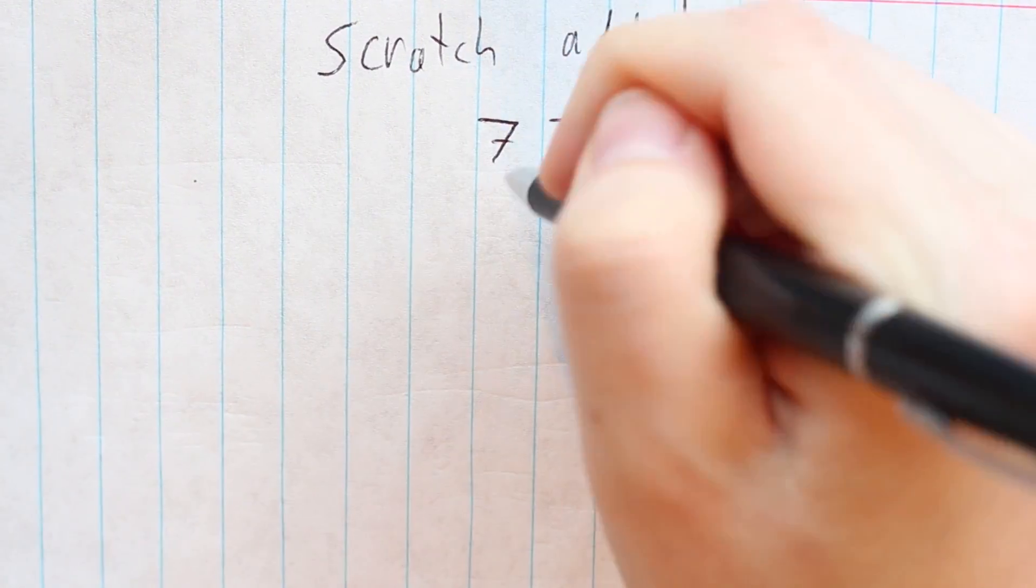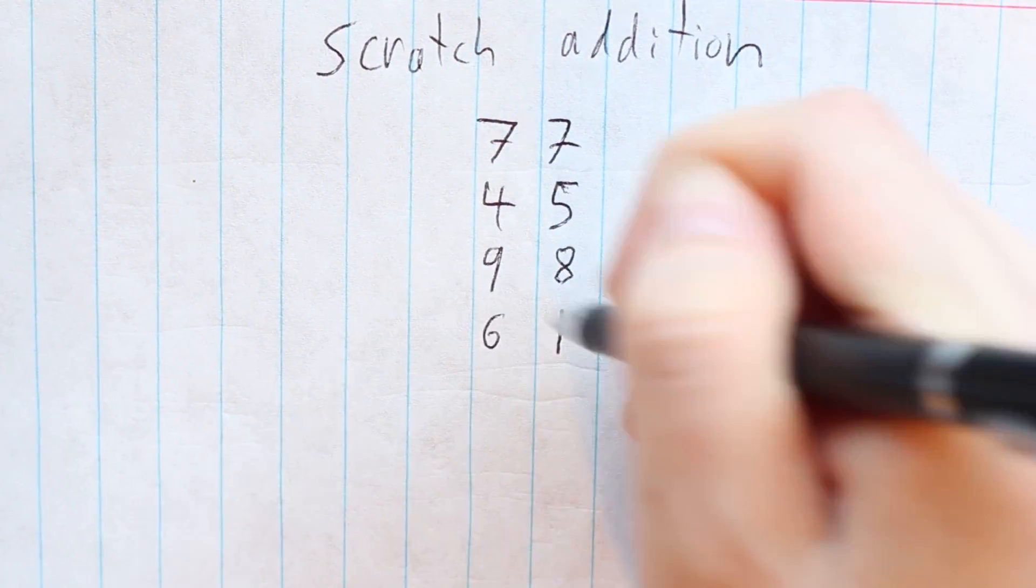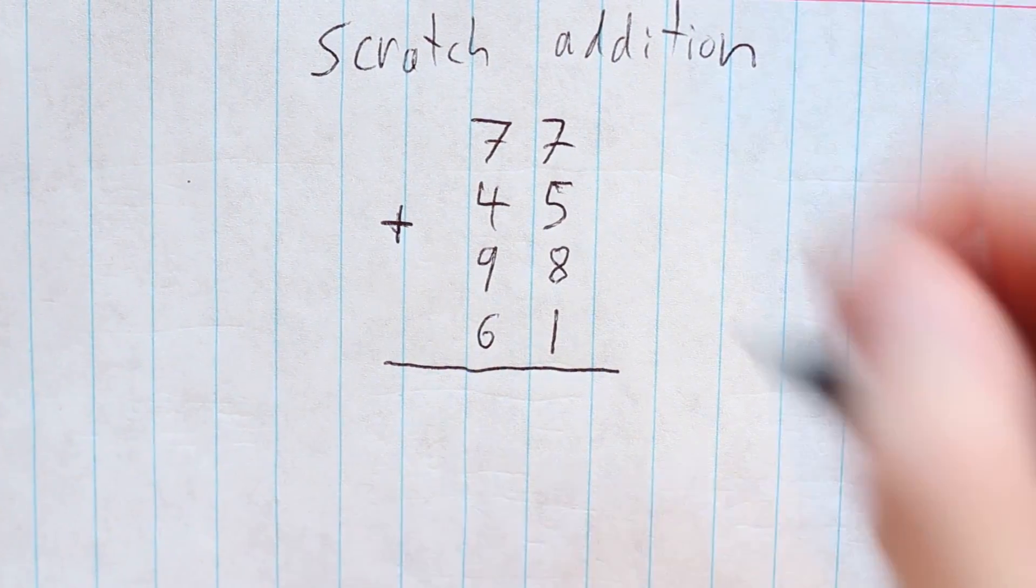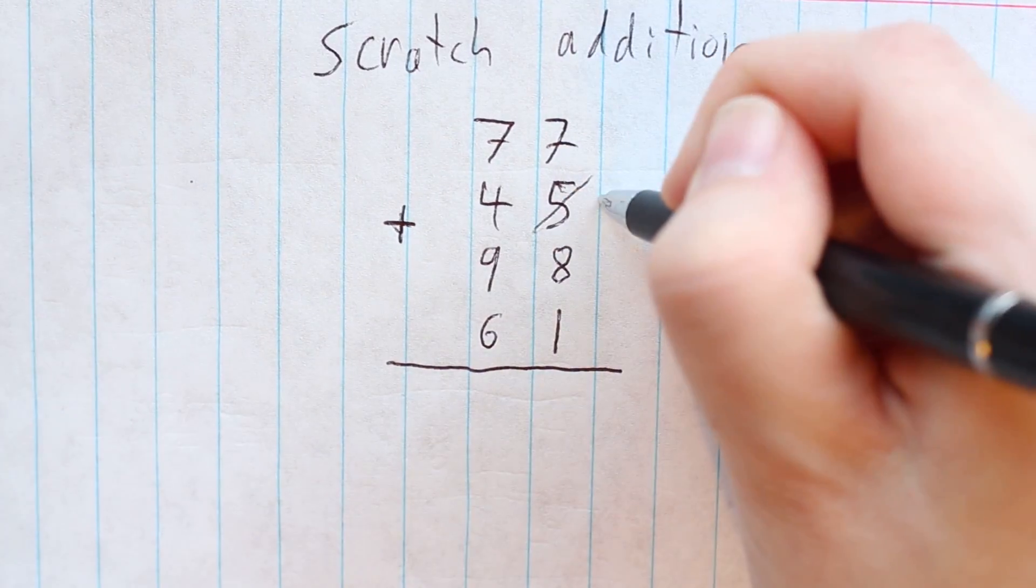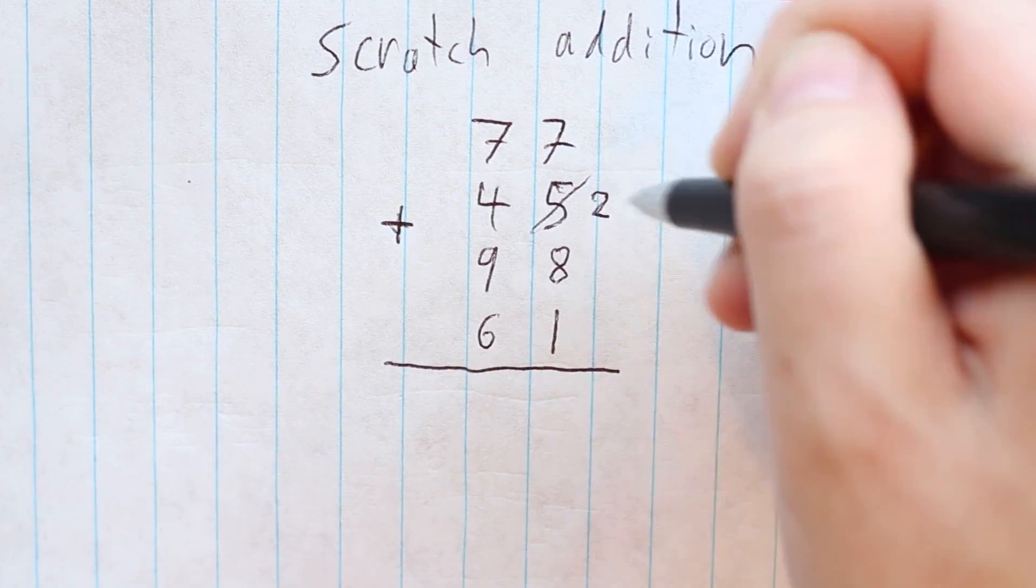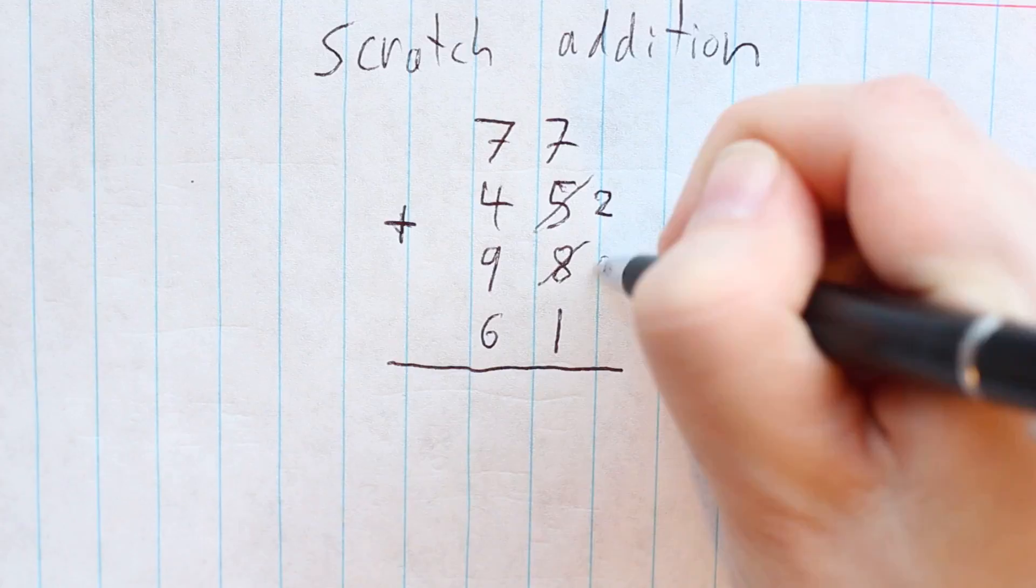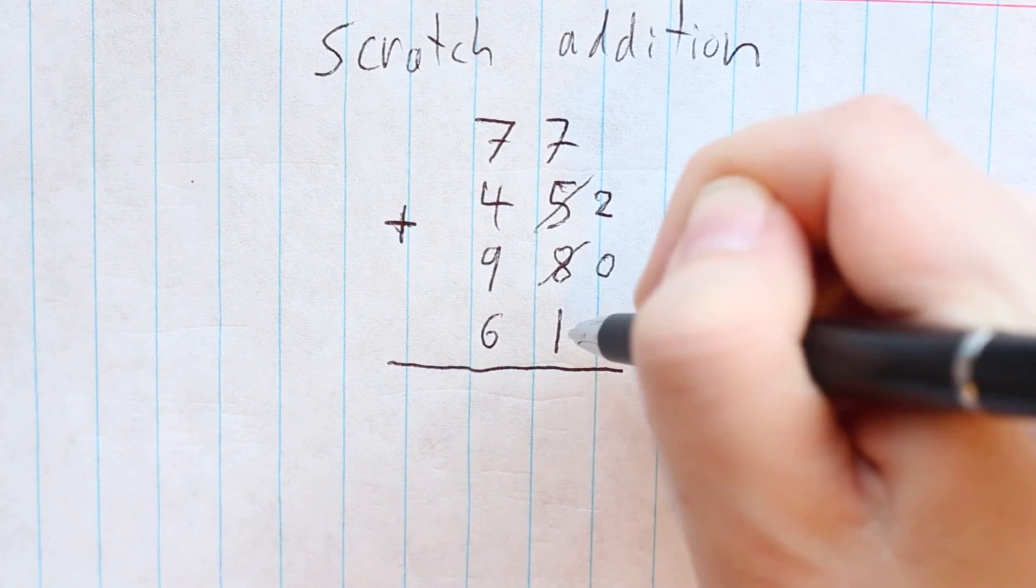It's made specifically for adding many columns of numbers. Here, 7 plus 5 is 12. Instead of carrying the 10, you make a scratch and write the 2. Then 2 plus 8 is 10, so make another scratch and write a 0. Then 0 plus 1 is 1.